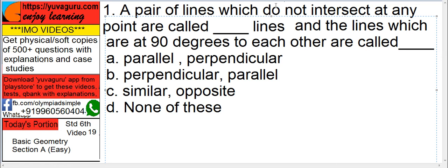Let's start. A pair of lines which do not intersect at any point are called ___ lines, and the lines which are at 90 degrees to each other are called ___ lines.